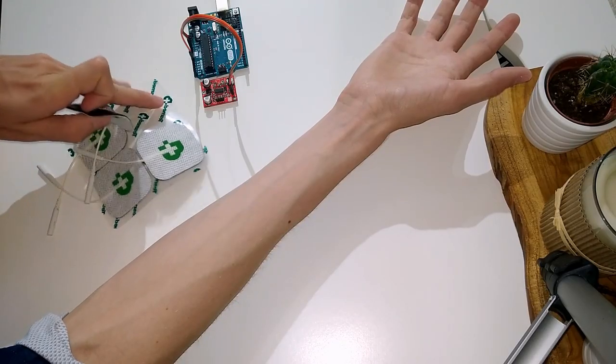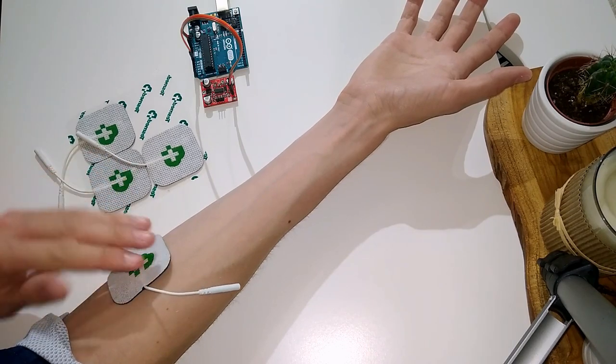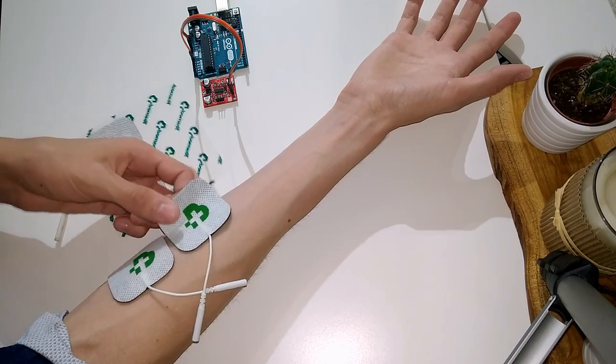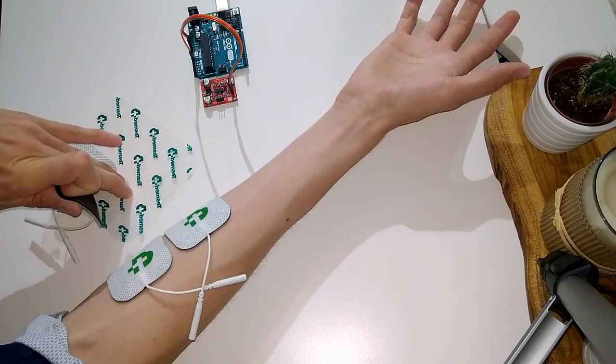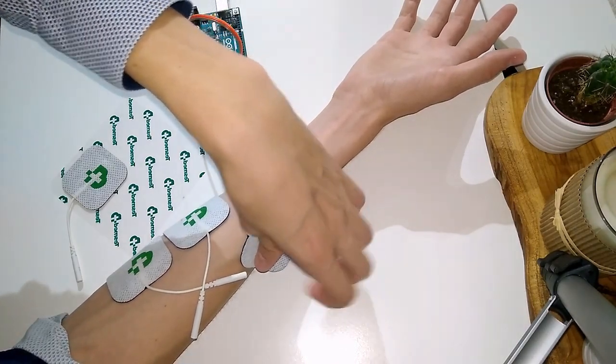Two electrodes should be placed on the muscle, while the third one is on a neutral zone, a bone. These reusable electrodes shown here give very good results, especially on large muscles.